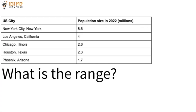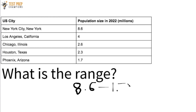Sticking with the same data set, what is the range? The range is simply the biggest number minus the smallest number. The biggest number is 21.9 and the smallest is 10.8. So 21.9 minus 10.8 gives you 11.1 million as the range. Briefly about mode: in this data set we don't have a mode. The mode is simply the most occurring number in the data set. If every number only occurs once, there's no mode. If a number appeared twice, that would be the mode.